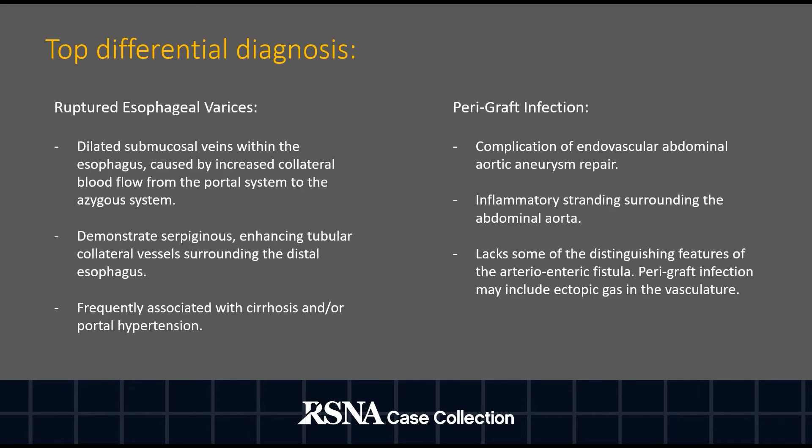Top differential diagnoses include ruptured esophageal varices or paragraft infection. In the case of esophageal varices, dilated submucosal veins arise in the esophagus as a result of increased collateral blood flow from the portal system to the azygous system. On CT scan, expect to see serpiginous enhancing tubular collateral vessels surrounding the distal esophagus. Varices are often associated with cirrhosis and/or portal hypertension.